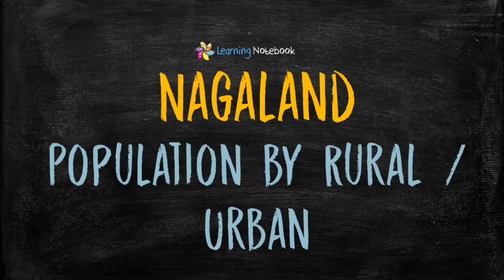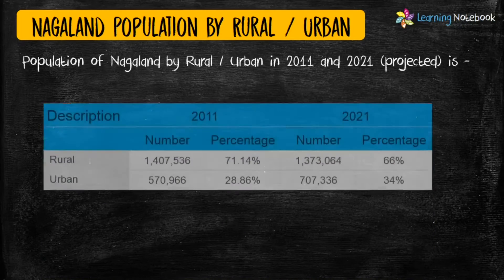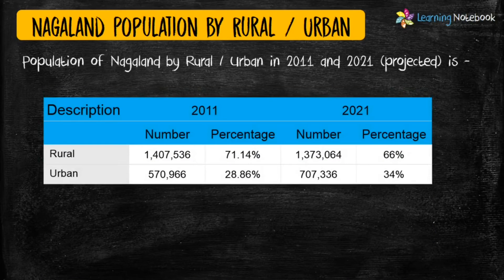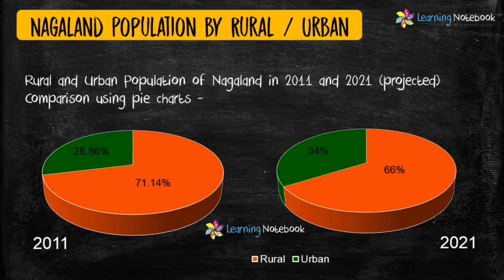The next idea for your maths art integrative project is population of Nagaland by rural and urban division. See here how we have used two pie charts to compare rural and urban population of Nagaland for two years.